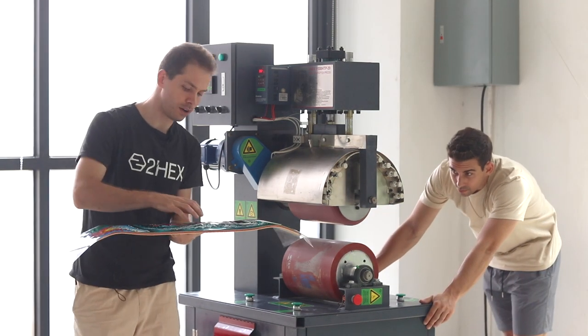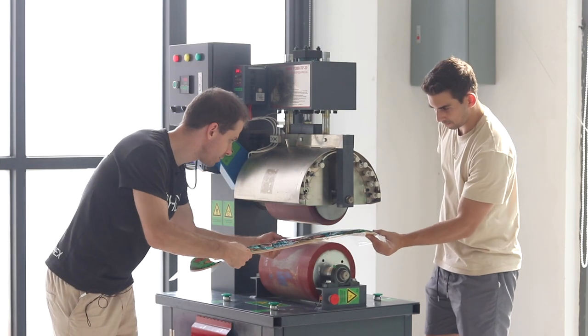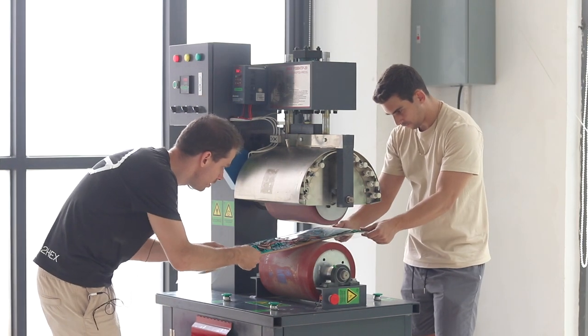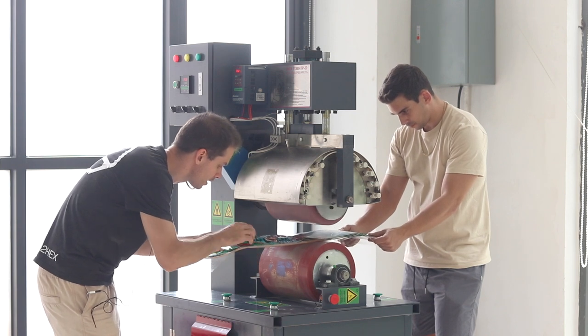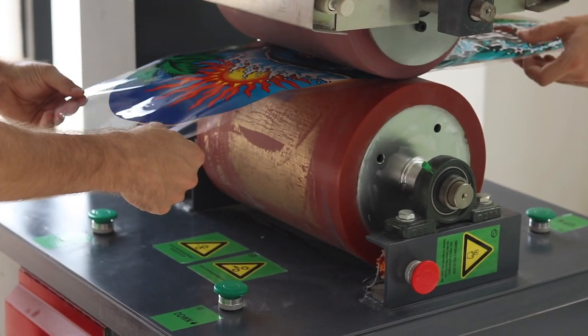Place the heat transfer on the deck and make sure it's centered correctly. Then place the deck and the heat transfer between the upper and lower roller. Make sure both you and your partner stretch the heat transfer a little bit and then press down around the middle of the deck.